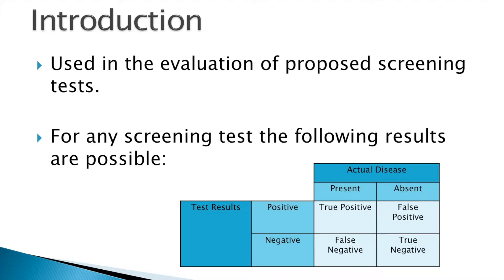For any screening test, the following results are possible. A patient with disease may have a positive test, known as a true positive. If this patient with disease had a negative test, this would be considered a false negative. When a patient does not have the disease and the test is negative, this is a true negative. And if the patient without disease has a positive test, this will be known as a false positive.